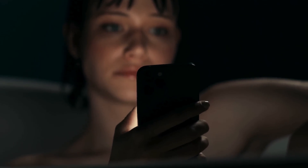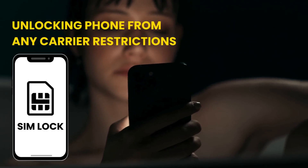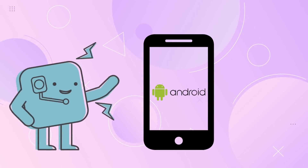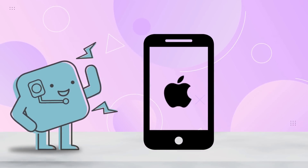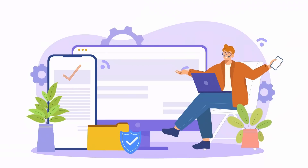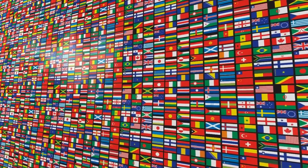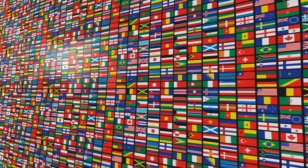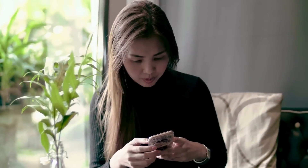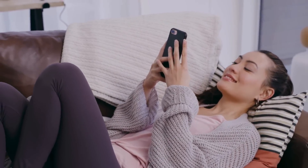Hey everyone, it's Ryan here. Today we're diving into something super useful: unlocking your phone from any carrier restrictions. Whether you've got an Android or an iPhone, we've got you covered. We'll show you multiple ways to remove the carrier lock so you can switch to any network you want, regardless of your country or carrier brand. These methods are quick, easy, and can be done from the comfort of your home. Let's get started and free up your phone.